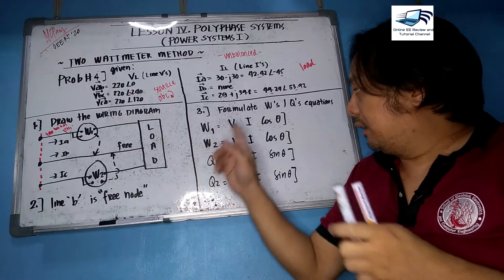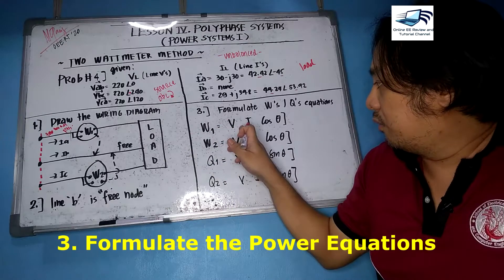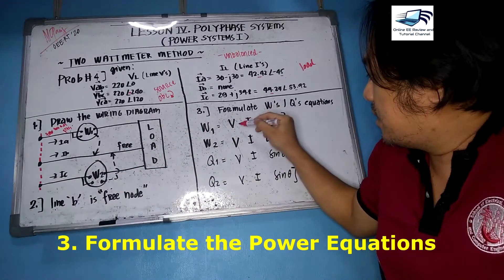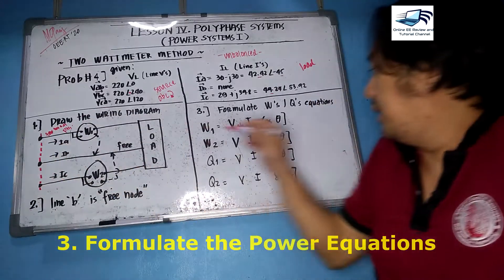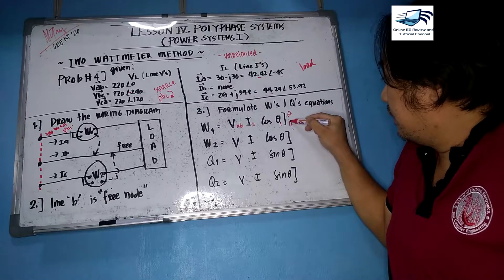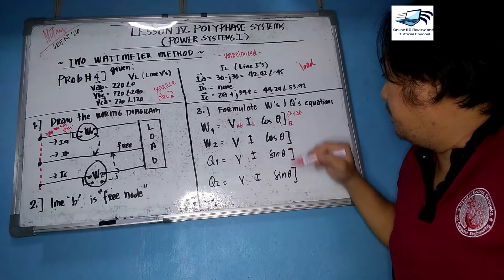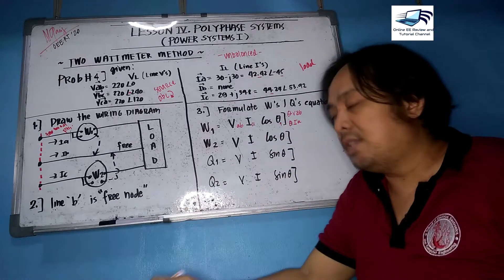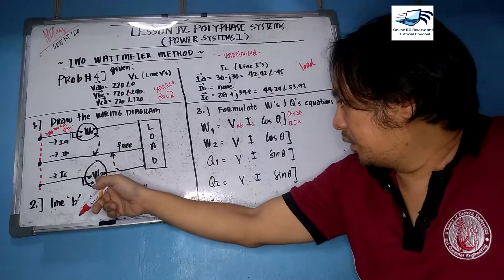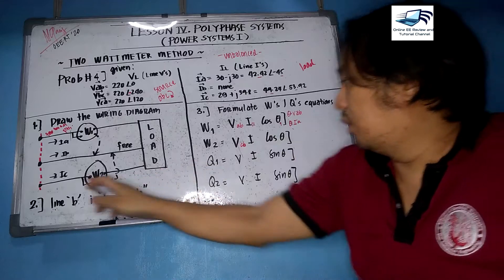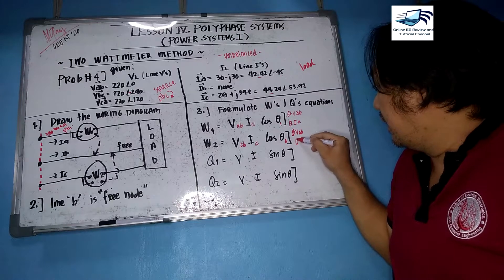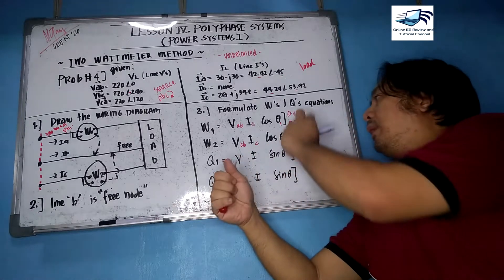Let us have the wattmeter readings. The voltage coil of wattmeter one is connected A to B, so we have Vab, and you have your line current Ia. This gives angle theta one, which is dependent upon the angle displacement of voltage Vab and current Ia. For W2, the connection is Vcb, so you have line current Ic and angle theta two, which is dependent upon the angle of Vcb and the angle of current Ic.